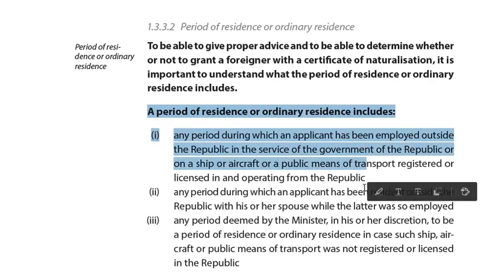This is our answer right here from the study guide: 'A period of residence or ordinary residence includes any period during which an applicant has been employed outside the Republic in the service of the government of the Republic, or on a ship or aircraft or a public means of transport registered or licensed in and operating from the Republic' — exactly as it is on the tutorial letter 101. So we pass.